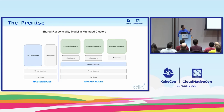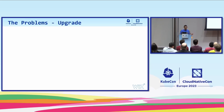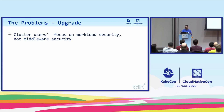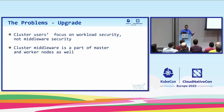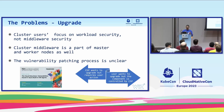The problem is that we see middleware running as part of the master nodes. So this separation where we think of customers as responsible for worker nodes and CSP responsible for master nodes — this separation is not clear, and the boundaries are blurred. The most obvious problem is upgrade, because cluster users focus on workload security, not control plane and not the middleware. The vulnerability patching process is unclear.